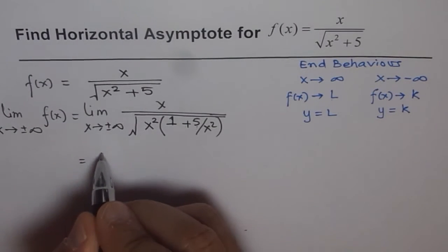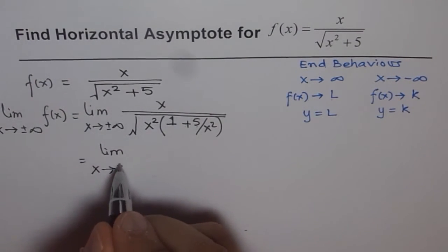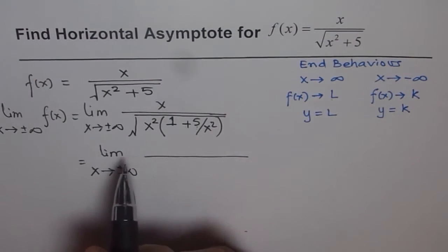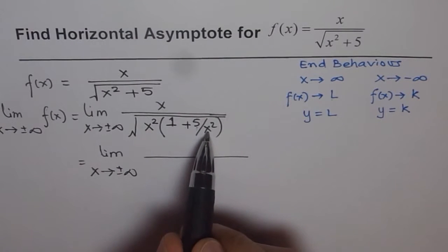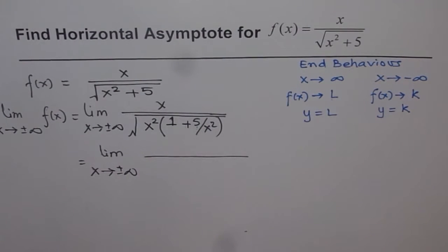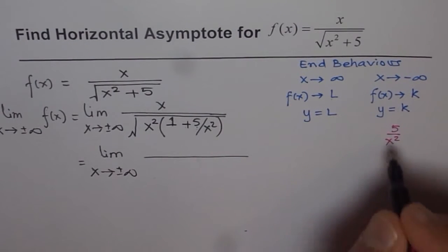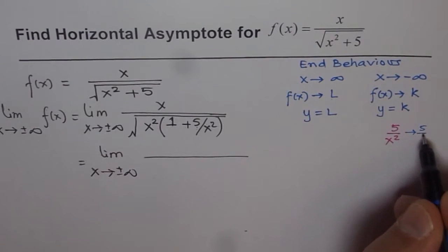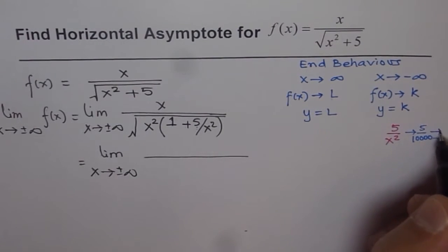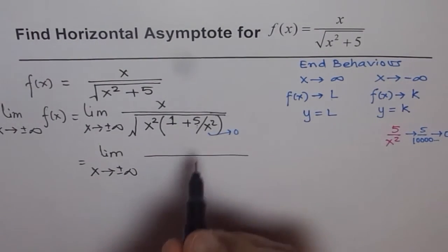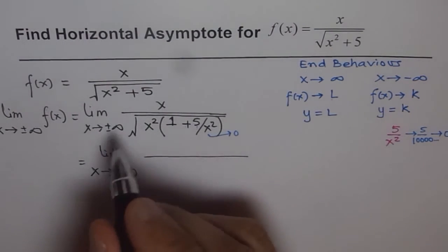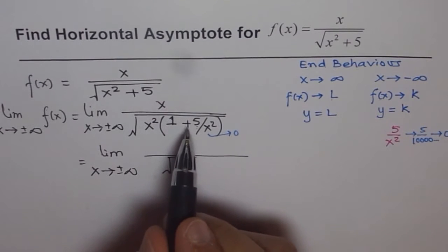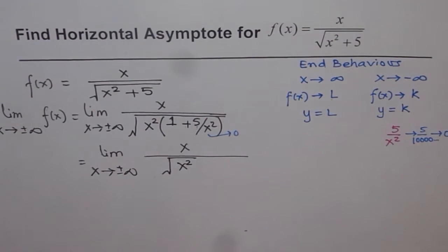Now the next step is the most critical step of this exercise. As x approaches plus or minus infinity, one thing is very clear: 5/x² will approach 0, because x is approaching a very large number, so 5 divided by a very large number approaches 0. So we can write our function as x over the square root of x², since 1 + 0 is just 1.